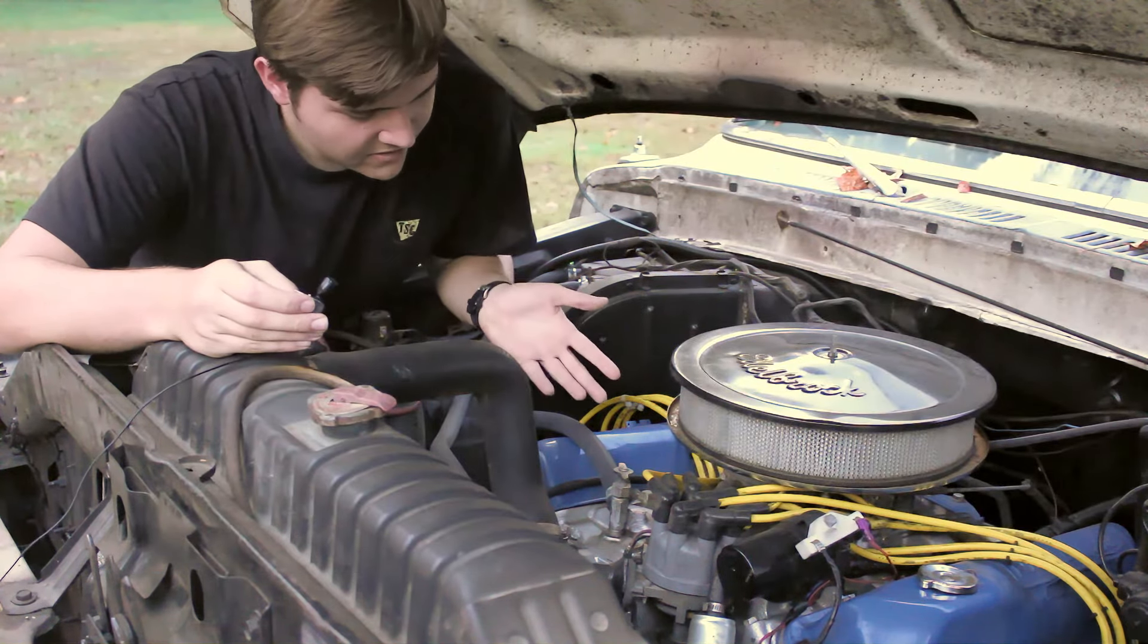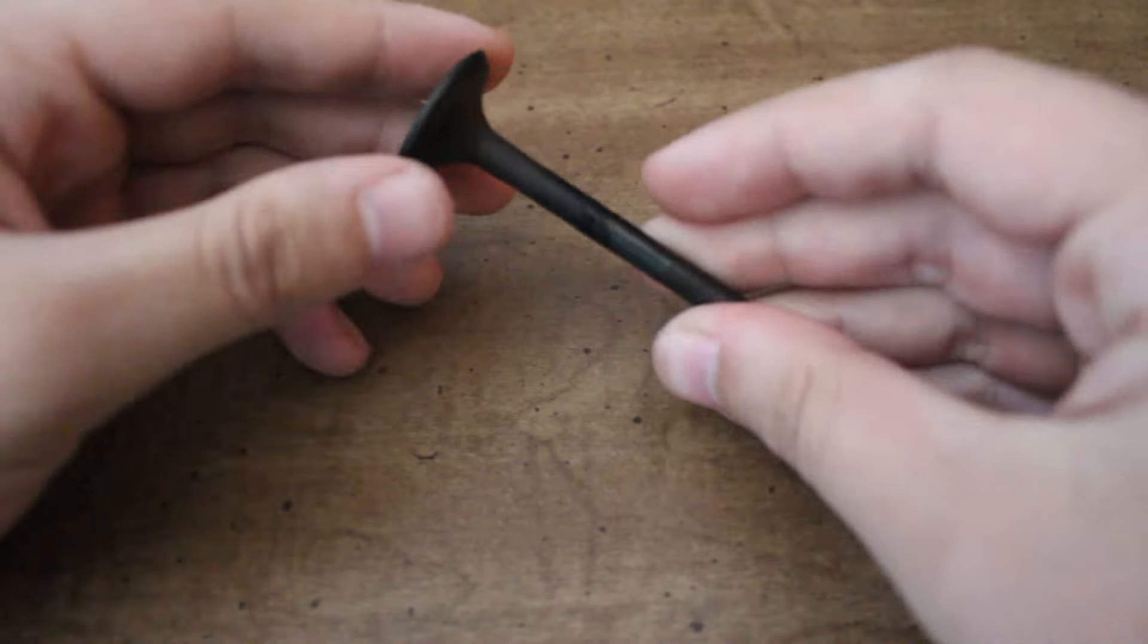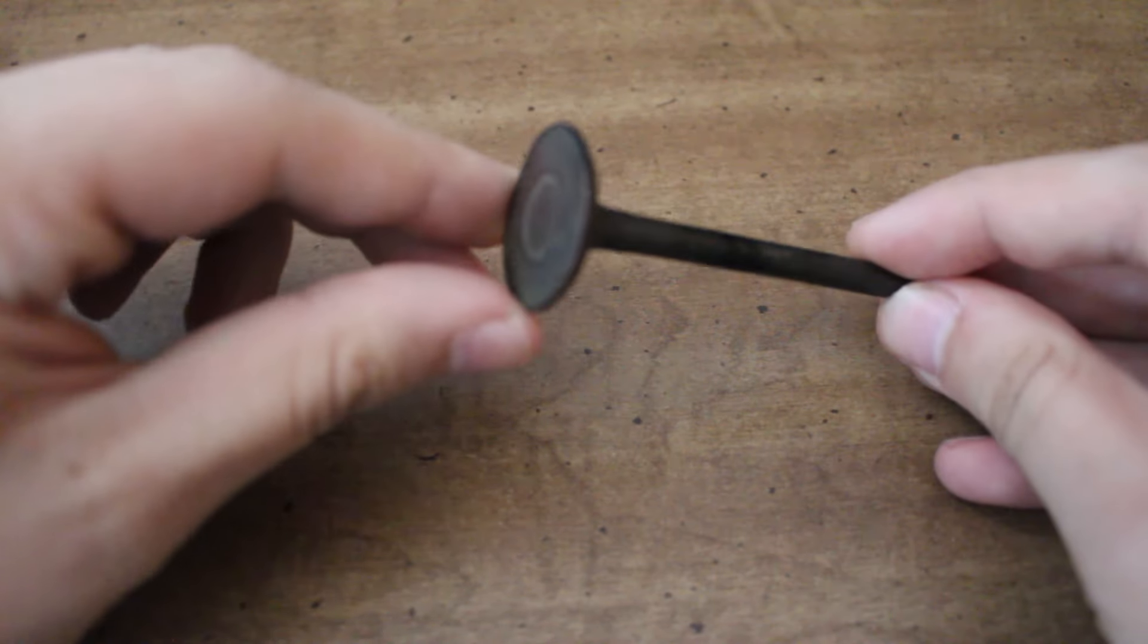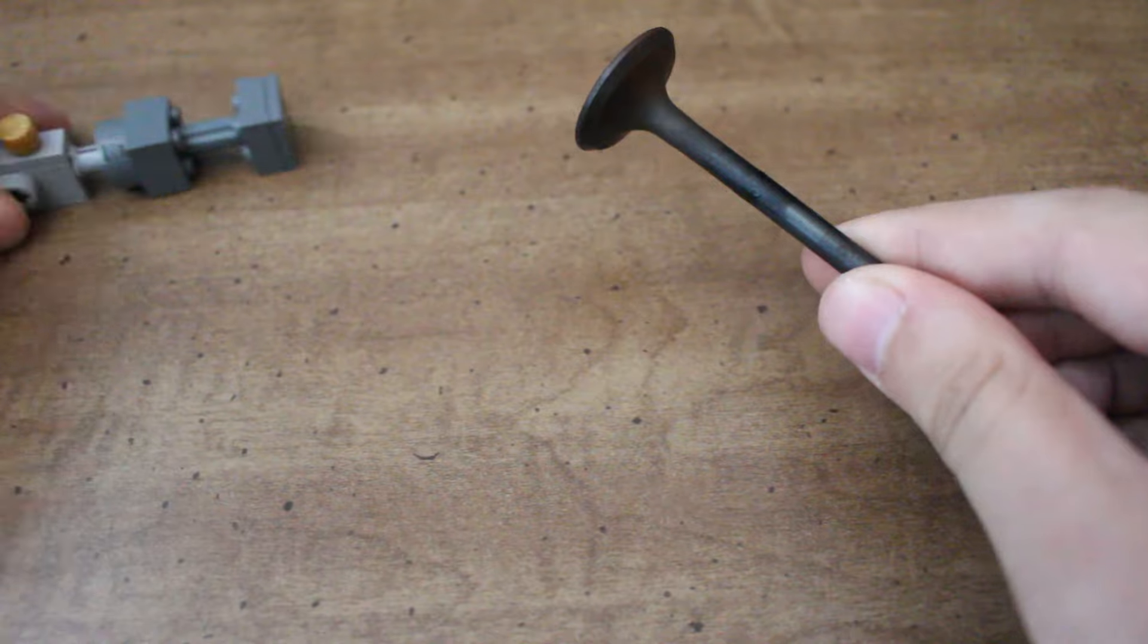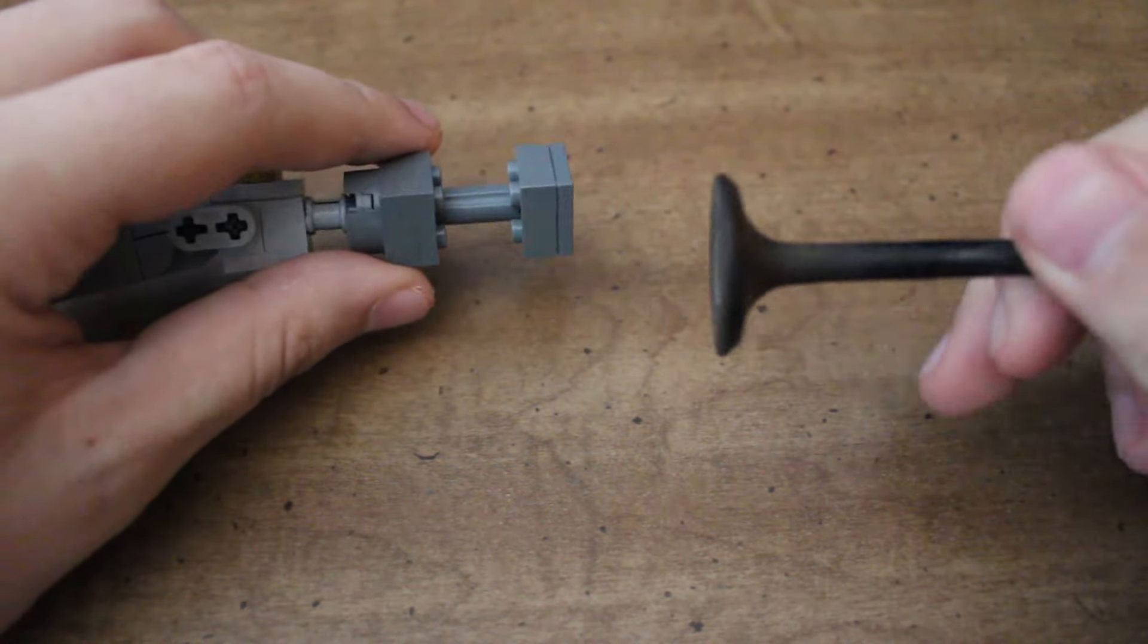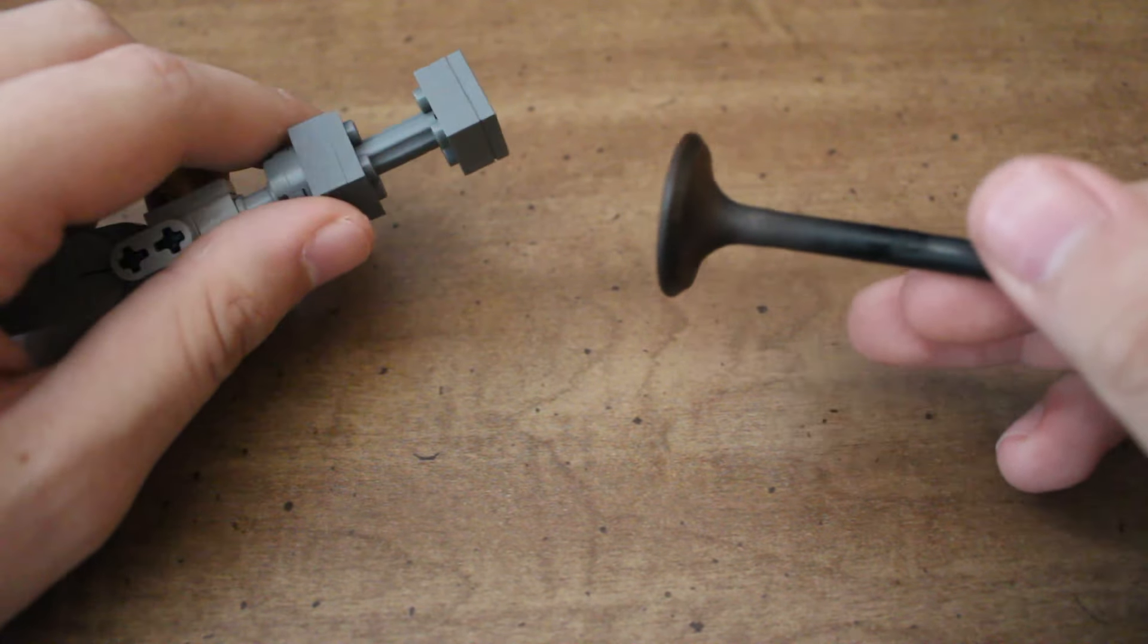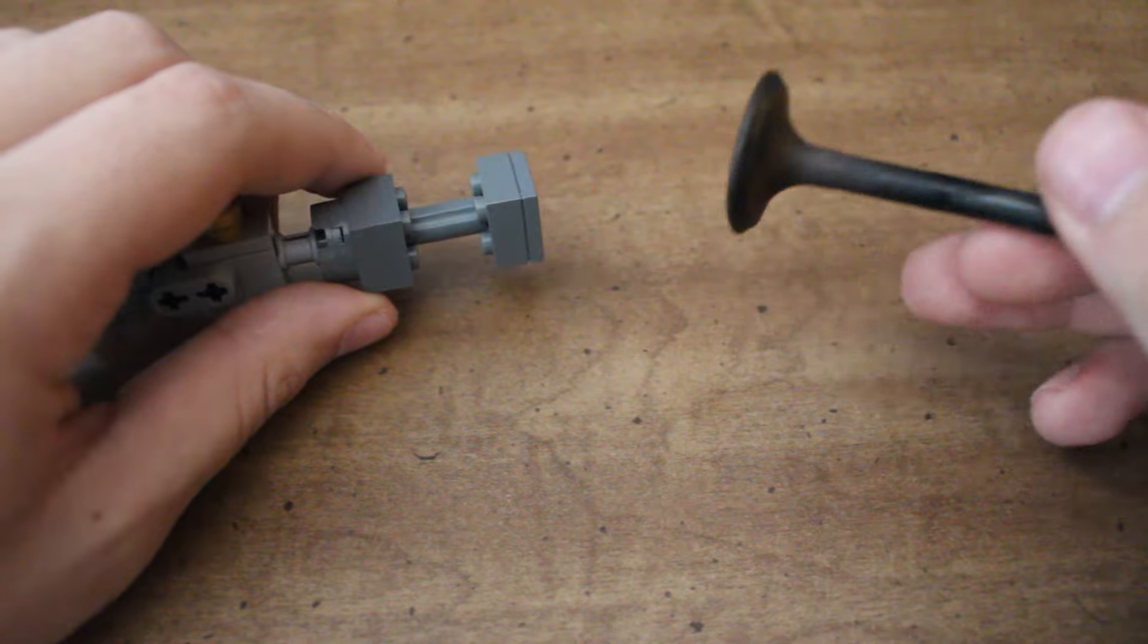However, the valves in this engine look a little bit different than the valves of a steam engine. So this is a valve from an engine like the one we just saw, and this is the valve from my steam engine model. As you can see, they look quite different from one another, but they do the same thing. They control when and where the air moves within the engine.